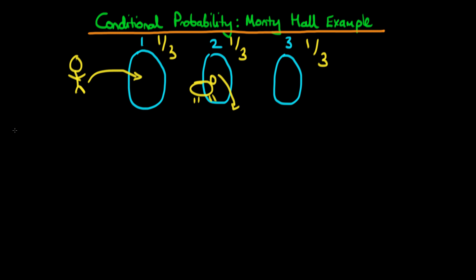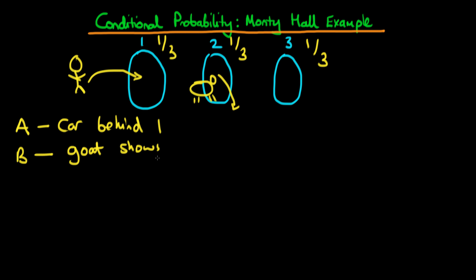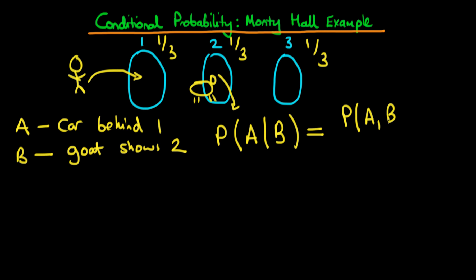When we frame this in conditional probability terms, we define event A as the event that the car is behind door one, and event B as the event that the game show host shows a goat behind door two. We'd like to work out the probability that the car is behind door one given that the host shows a goat behind door two — that is, P(A|B), which equals P(A and B) divided by P(B).